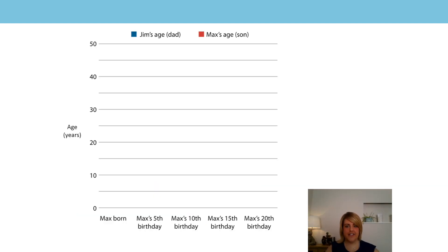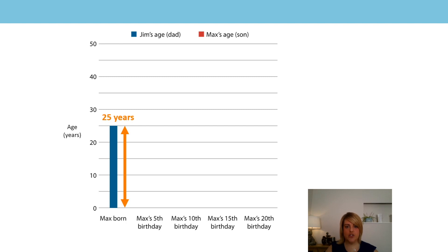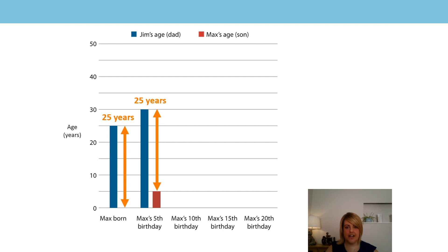Let's move on to our learning for this lesson. We are going to continue to look at difference. Here we have a graph showing the difference in age between Max and his dad Jim. When Max was born, Jim was 25 years old. Therefore, what is the difference between their ages? Yes, that's right — 25 years. You can see that here marked by the orange arrow. When Jim is 30, Max is only 5. So what's the difference between their ages now? Yes, that's right — it's 25 years.